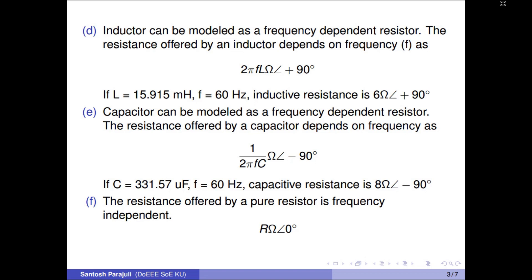F: To be in line with resistance notation of inductor and capacitor, it is recommended to write pure resistance as R ohms angle 0 degrees. This means resistor resistance is frequency-independent and a resistor does not introduce any phase shift between current and voltage.